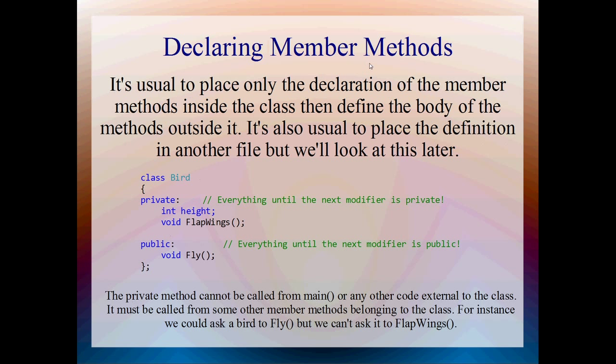Okay, declaring member methods is a little bit more complicated. Not too much, though. It's usual to place the declaration of the member methods inside the class themselves, but define the body of the method outside the class. Yeah, it is usual to do that. And it actually means something else to define a member method within the class. That means inline it. But we're not going through that now. Yeah, this is what you do. Void flapWings, open close curly brackets, so you put your parameters in there. This one's got no parameters, so it's just got a semicolon. So that's just a declaration. That's not the actual member method. And I've also got a public member method called fly. So the private method couldn't be called from main. If we made ourselves a bird called sparrow, we couldn't tell it to flap its wings. Nope. The only thing we could tell it to do would be to fly. And the sparrow itself would have to choose to flap its wings.